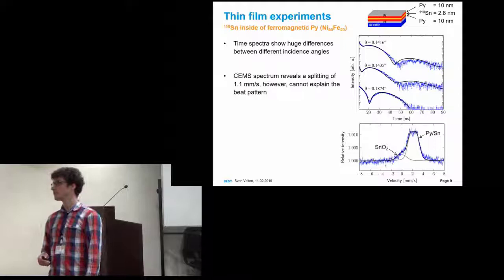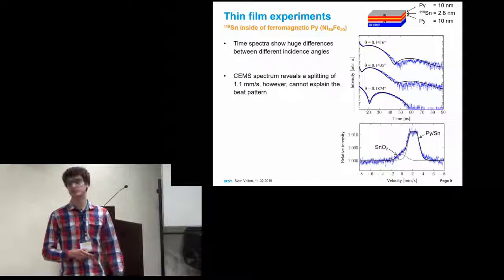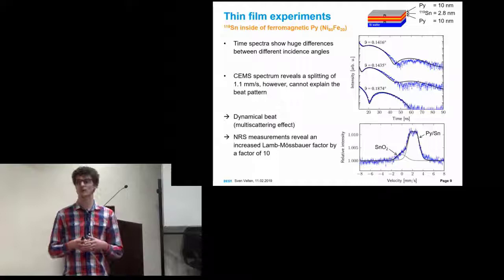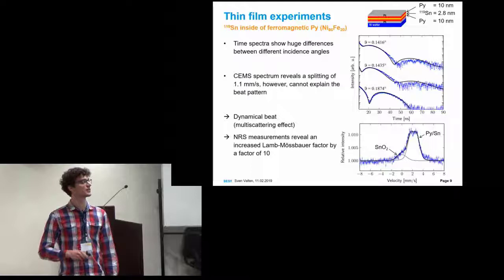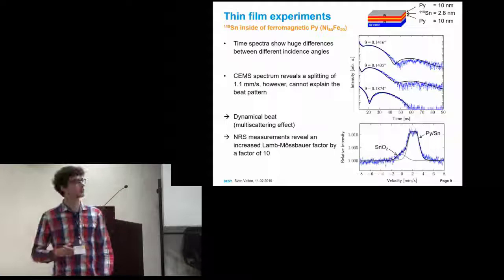But this does not explain this change of the time spectra for different incidence angles. This is very likely a strong indication for a so-called dynamical beat. This is a multi-scattering effect. That means that we have more material than we expected. This is only possible to fit all these data - the CEMS measurements, the NIS measurements, and the reflectivity measurements - if we assume an increased Lamb-Mössbauer factor of a factor of 10.